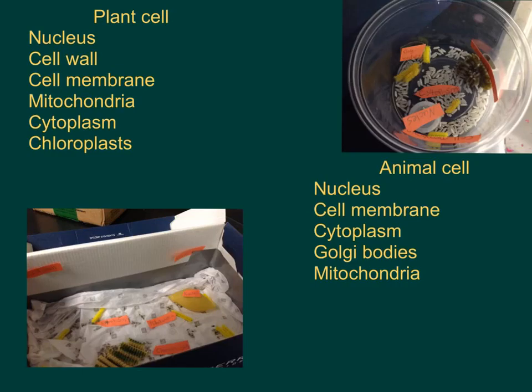For an animal cell, the nucleus is the boss of the cell — it holds all of the DNA. The cell membrane does the same thing as it does in the plant cell, and same with the cytoplasm.